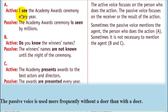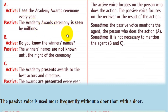Example A. Active: 'I see the Academy Awards ceremony every year.' Passive: 'The Academy Awards ceremony is seen by millions.' The active voice focuses on the person who does the action. The passive voice focuses on the result or direction of the action.